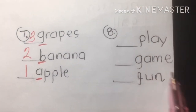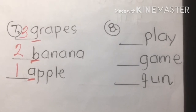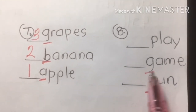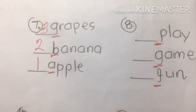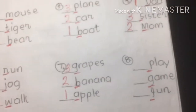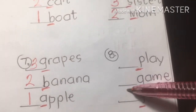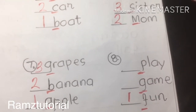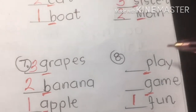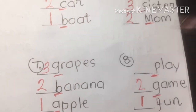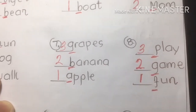Number eight: play, game, fun. Underline the first letters — F, G, and P. F comes first in the alphabet, so fun is number one. G is second — game. And P is third — play. The answer: fun, game, play.